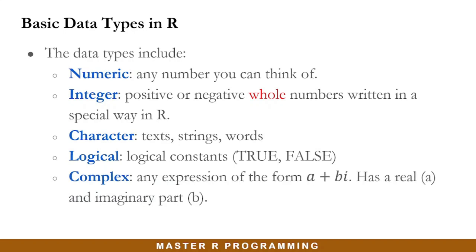Complex data type appears to be any expression of the form A plus BI. Complex data types have two parts: the real part, which is A, and the imaginary part, which is B, that comes with the I. These A and B are actually real numbers; this form is expressed as a complex data type.